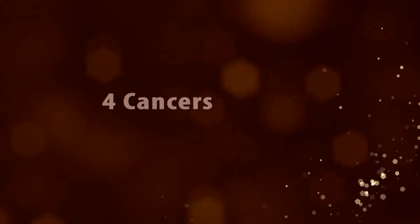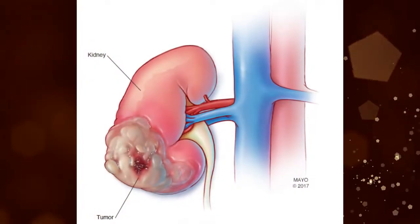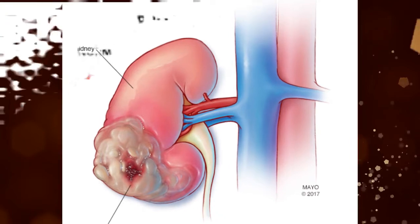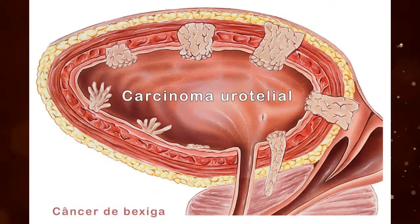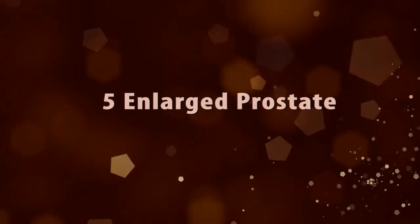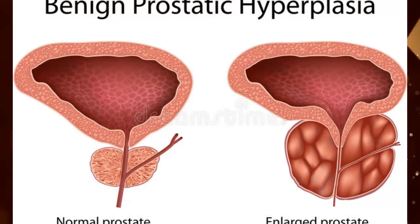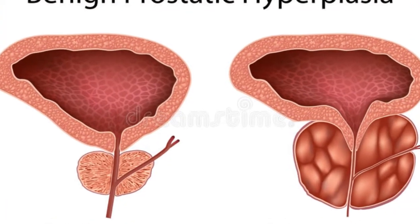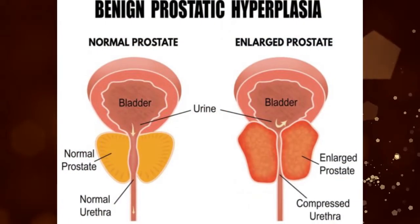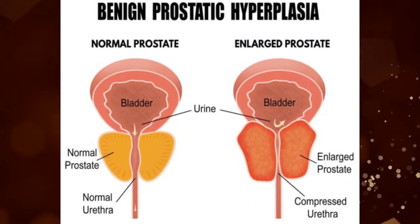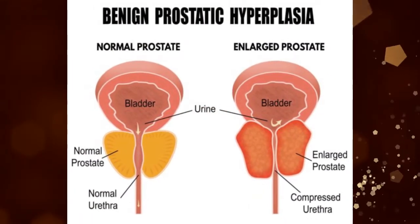Cancer can also be a contributing factor. Prostate, bladder, and kidney cancer are most commonly found in people aged over 50. Enlarged prostate, or benign prostatic hypertrophy, which is commonly seen in older men, can be another cause for blood in urine. It is a non-cancerous condition of the prostate gland.